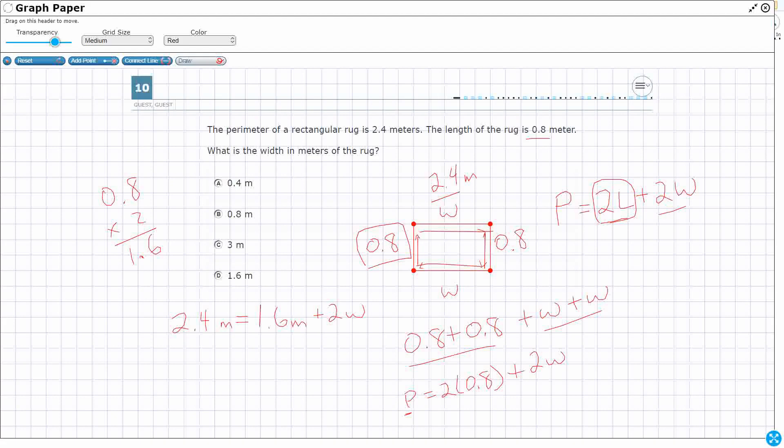So if we think of this like an addition fact family or subtraction fact family, we can think of a fact family like this. 2.4 meters equals 2W plus 1.6M. We know that we can flip the order of the addends, that's the commutative property. But we can also make subtraction facts.